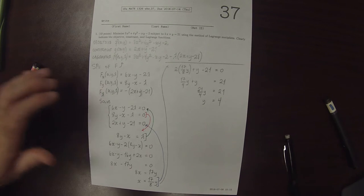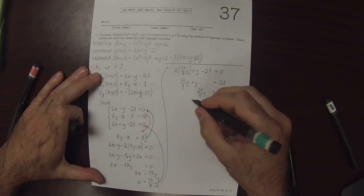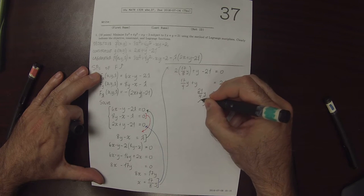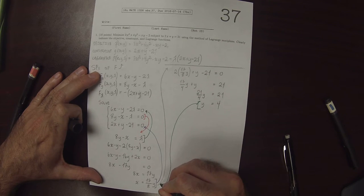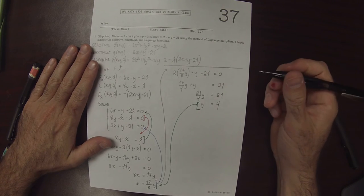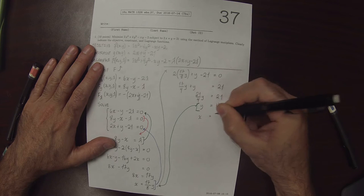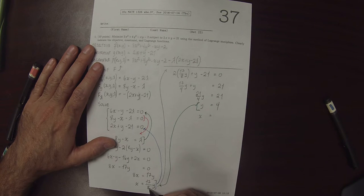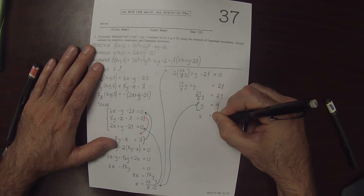Now we can take this, y is 4, and we can plug it back into here to get a value for x. So x is therefore 17 over 8 multiplied by 4 is 17 over 2. So the numbers aren't all that nice.